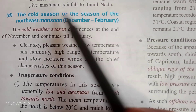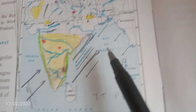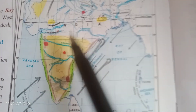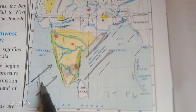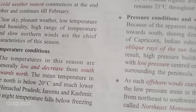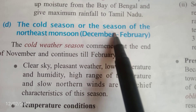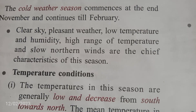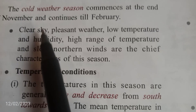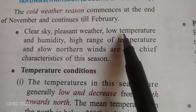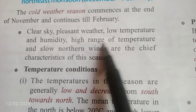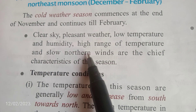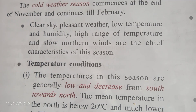Coming to the cold season, or the season of northeast monsoon winds: the season of retreating southwest monsoon winds is also known as the season of northeast monsoon winds, because it blows from northeast to southwest direction. This northeast monsoon season runs from December to February and is known as the cold season because it causes cold weather. The characteristics of this cold season are clear sky, pleasant weather, low temperature, low humidity, and high range of temperature.